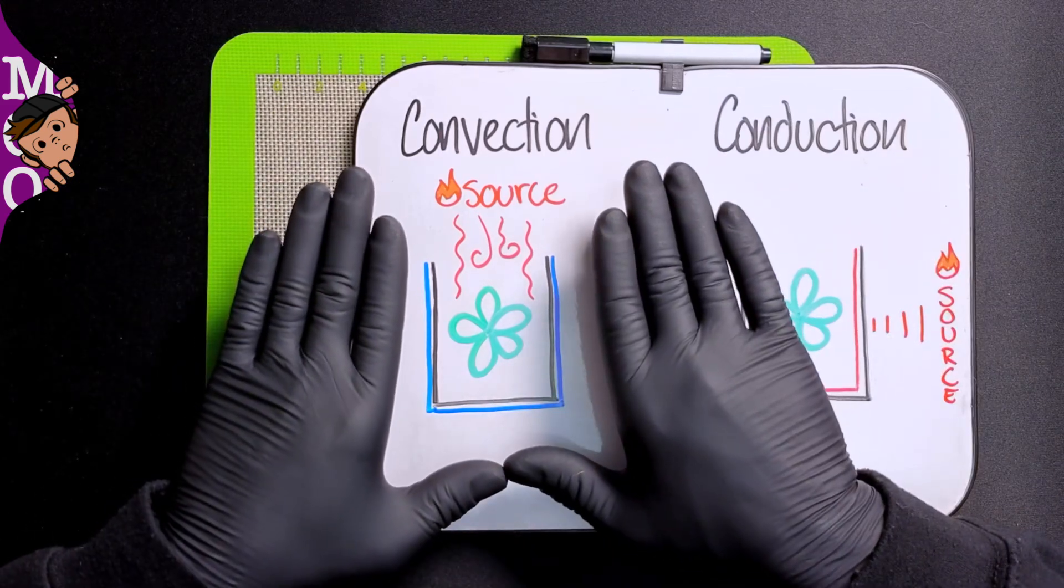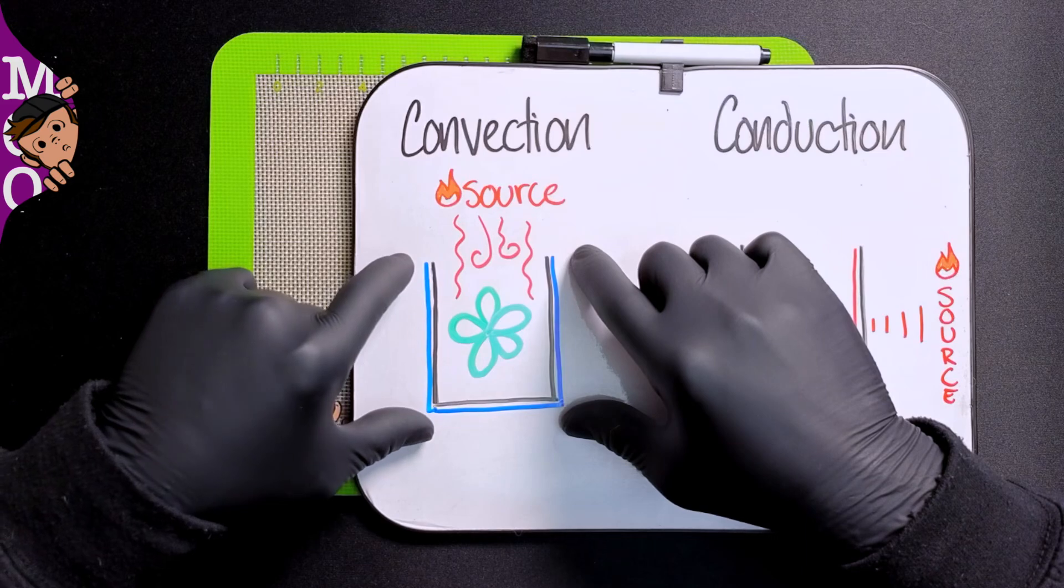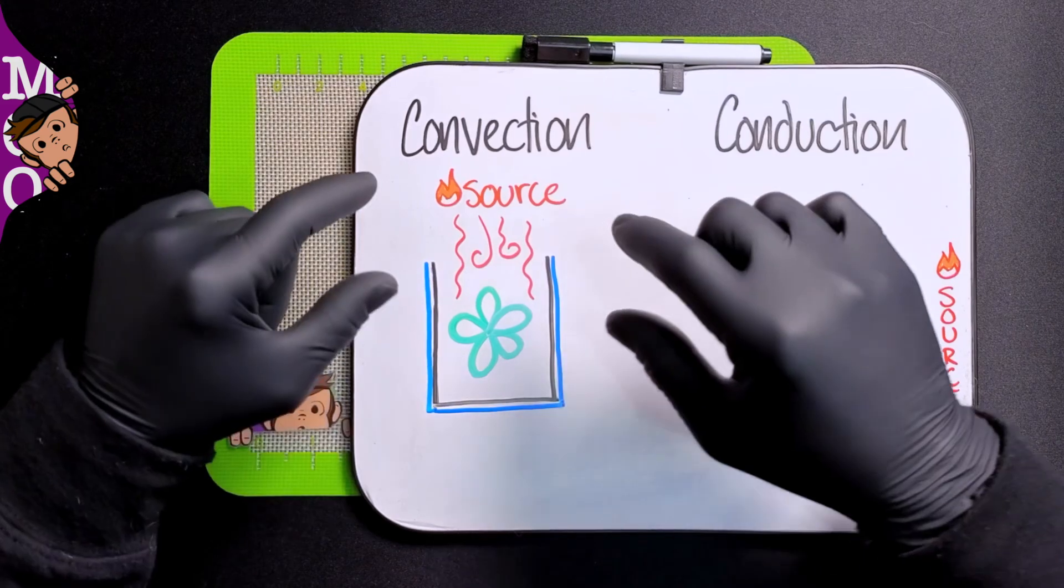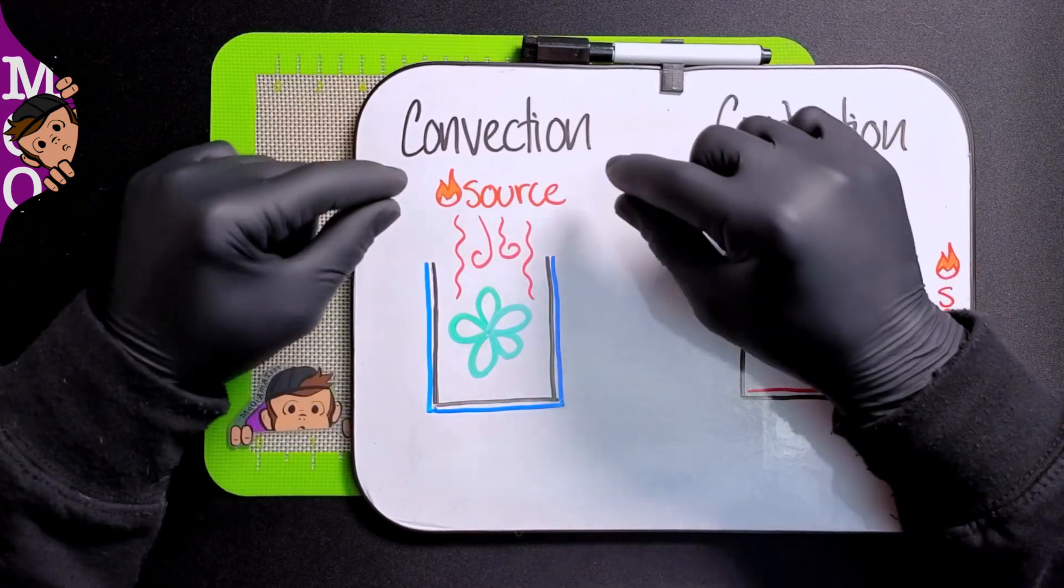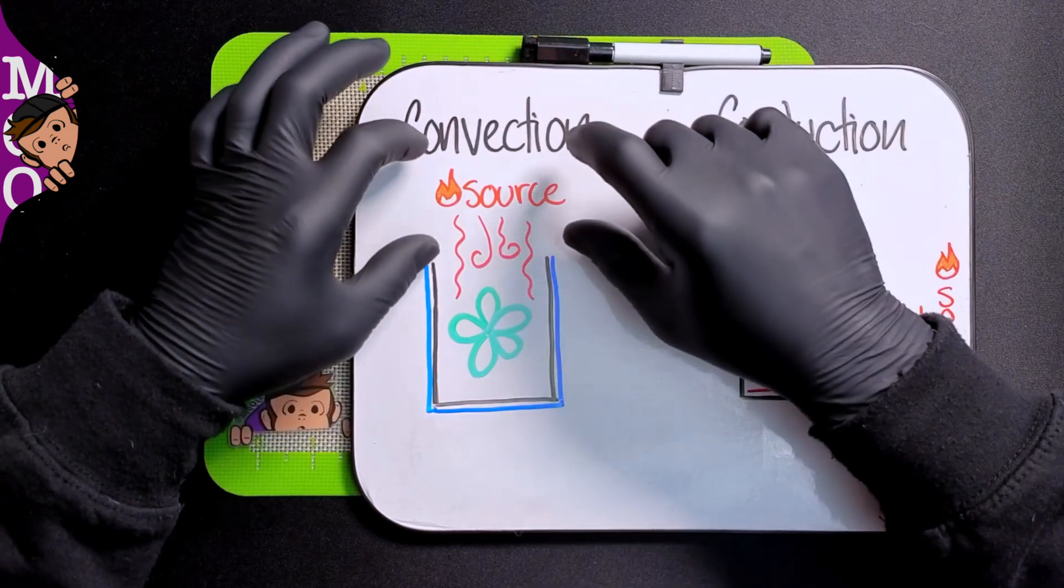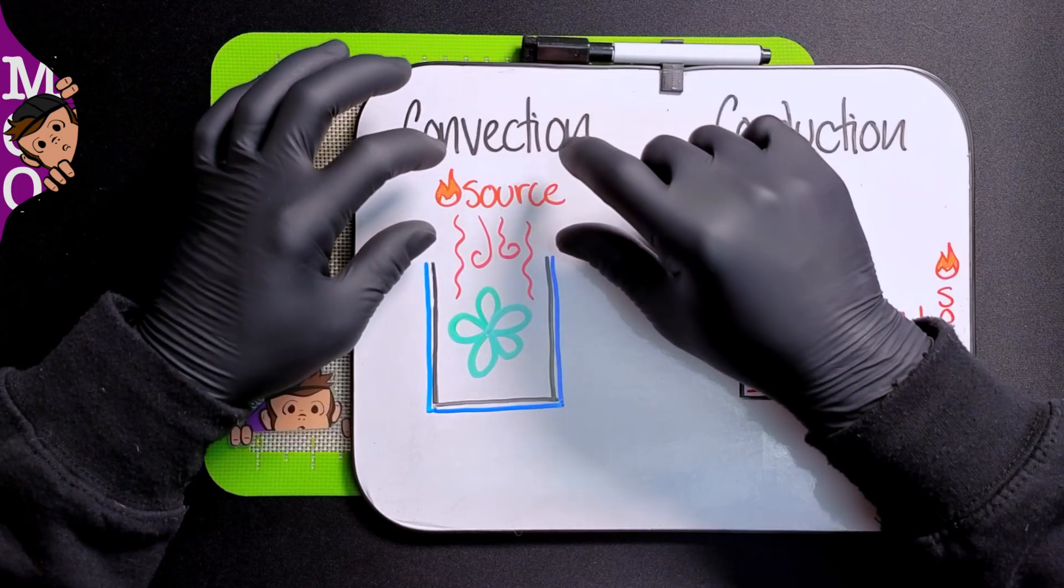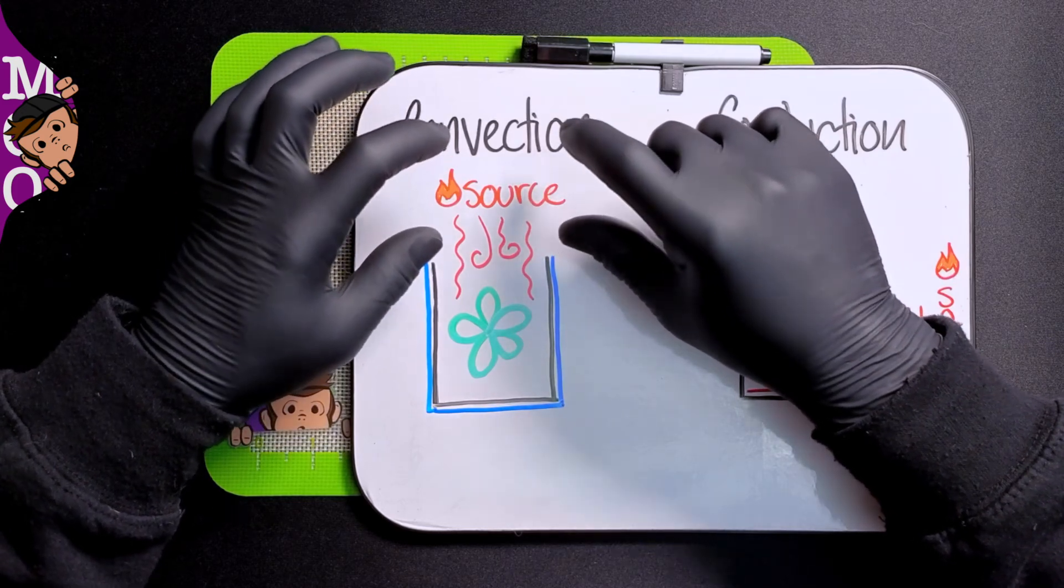The way you know you're using convection is you'll have a chamber with the flower or material that you're consuming, and then you'll have a heat source typically above the chamber. That heat source is going to be really hot, at vaporization temperature or a lot of times just above it.